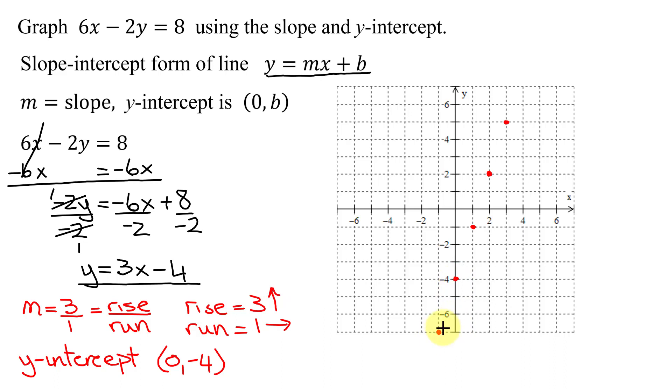So now I'm ready to graph my line. Hopefully I can get the line to go through my points. That looks pretty good. And don't forget to put arrows on both ends of your line. So this is the graph of the equation 6x minus 2y equals 8.